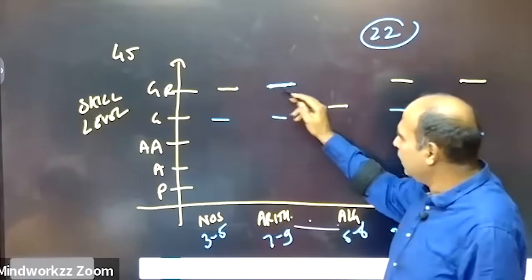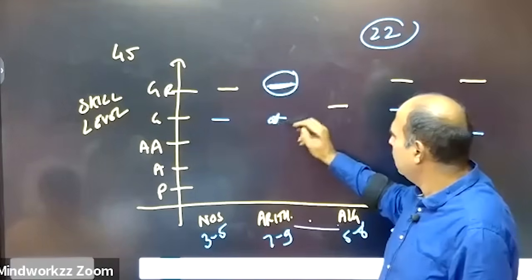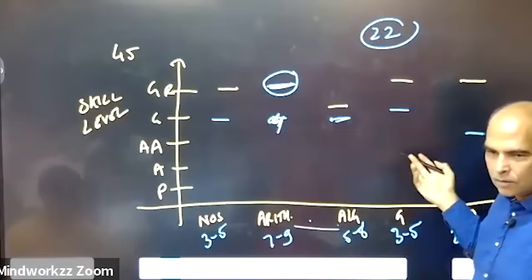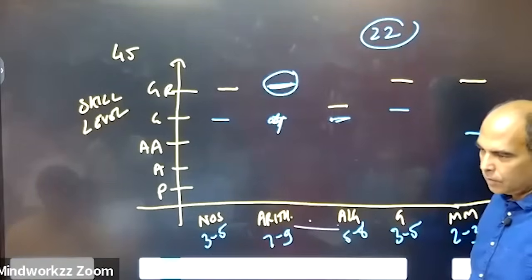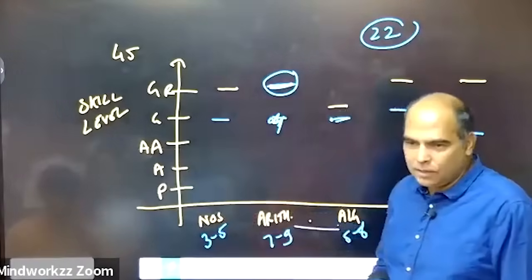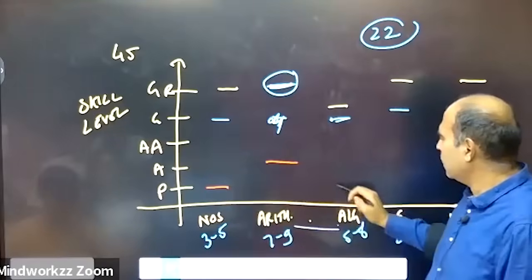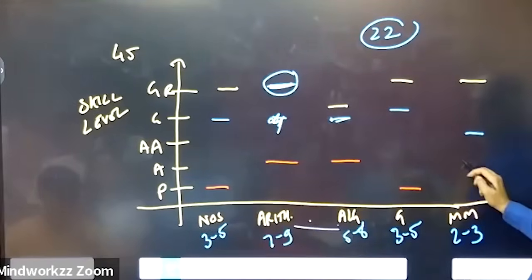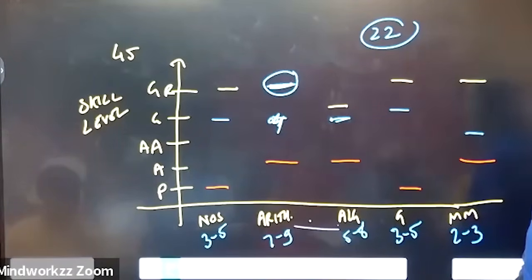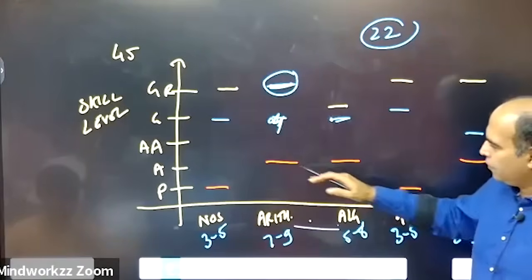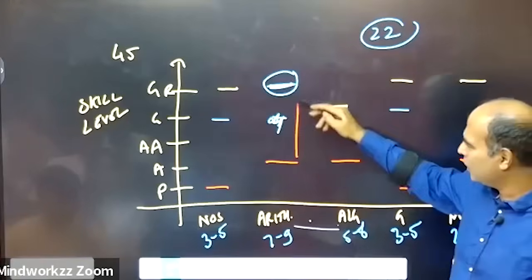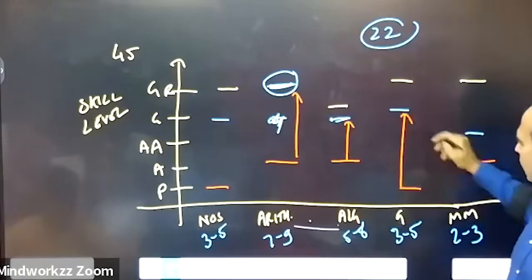If you can hit great at arithmetic and are just good at the other four areas, you can actually reach there. When planning your CAT preparation strategy, you might have a starting level — if you are weak at maths, it might be stuck in the lower parts of the skill axis. So you need to define: I need to go from average to great in arithmetic, from poor to good in numbers. This is the basic journey you are undertaking in each area.